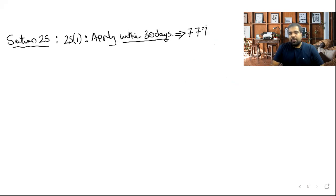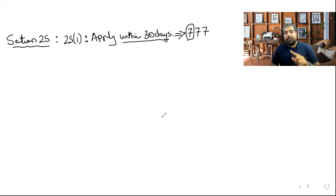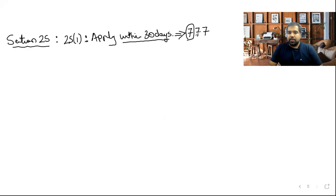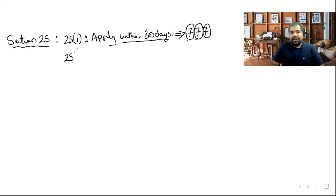The '777 shortcut': once you file a registration application on the GST portal, the GST officer has 7 working days to either raise a query or accept. If they do nothing, deemed acceptance occurs. Once you receive a notice, you have 7 working days to reply; if you don't, deemed cancellation. After you reply, the officer again has 7 days to accept or reject — no further queries allowed; again, no action means deemed acceptance.